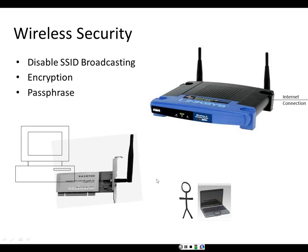In summary for wireless security: disable broadcasting on the wireless access point, enable encryption, and type in the passphrase. Then go to the workstations, type in the service set identifier, enable encryption, and type in the passphrase.